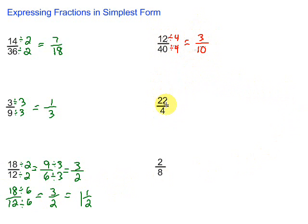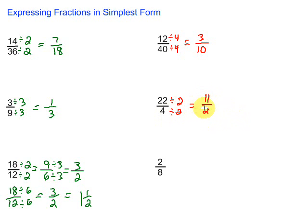How about 22 over 4? They're both even, so I know I can divide by 2. Divide by 2 top and bottom: 22 divided by 2 is 11, and 4 divided by 2 is 2. We can't simplify anymore, but we have an improper fraction. So we need to see how many 2's we can take out of 11. Well, 2 times 5 is 10 — so 5 is our whole number. If we take away 10 from 11, we have 1 left. So the answer is 5 and 1 half.